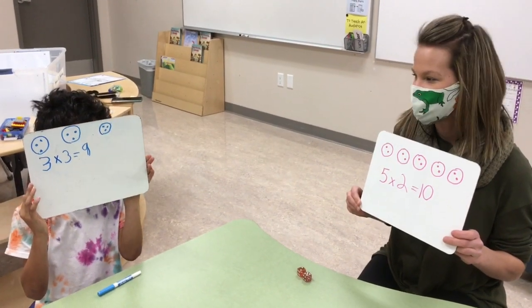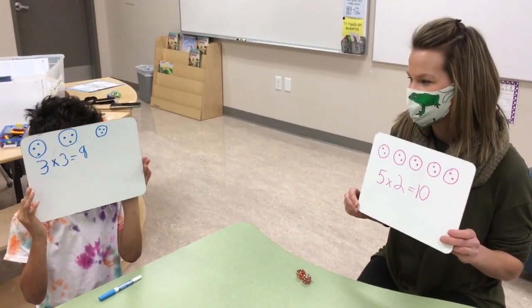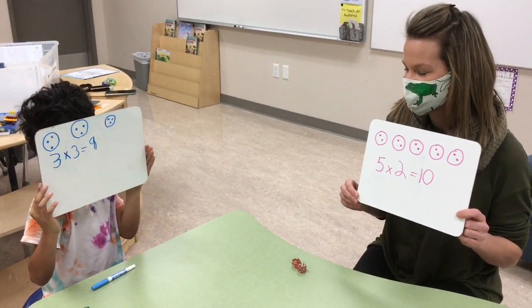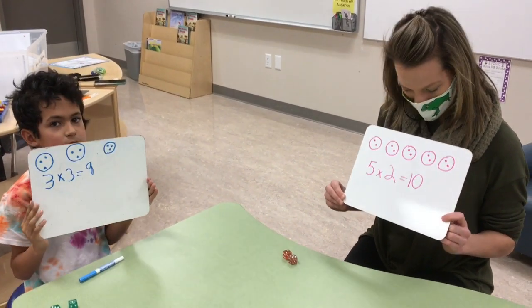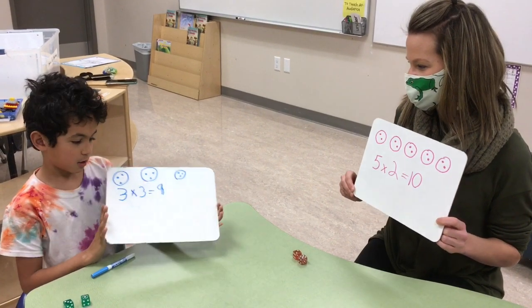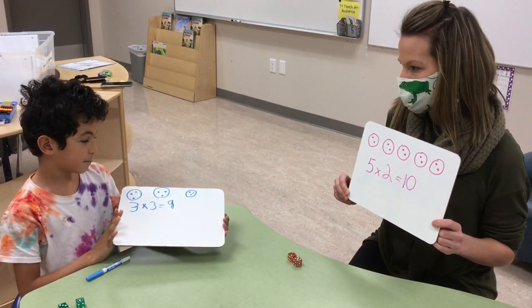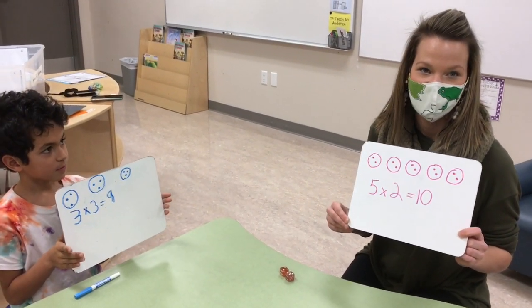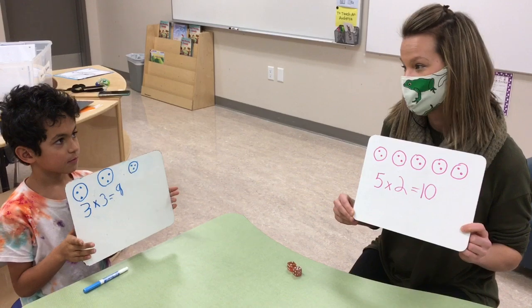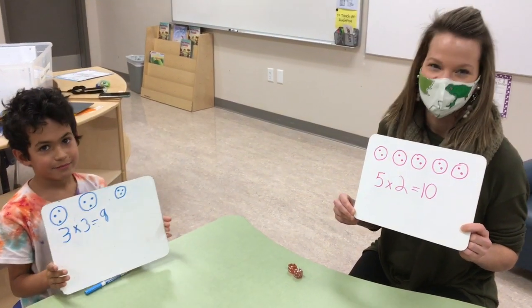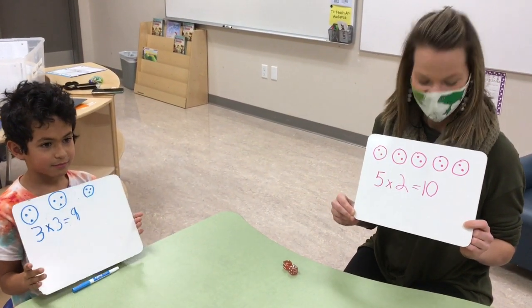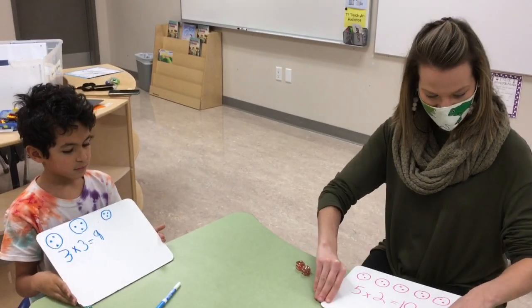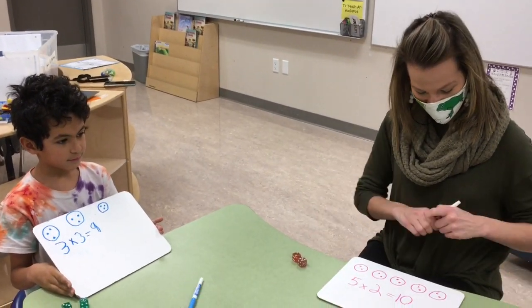So now we're done our first round. Whoever has the greatest product is going to get a point. Let's compare the products. Desmond, how many did you have? Nine. How many chocolate chips did you have, Ashley? Ten. So who gets the point for the round? Miss Elford. Okay, so Miss Elford is going to put a tally on her board to keep track. And then you would be able to start round two.